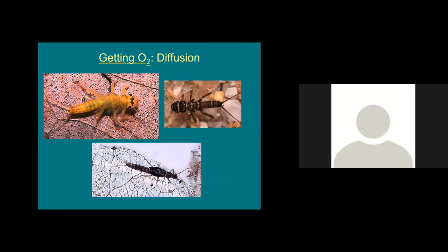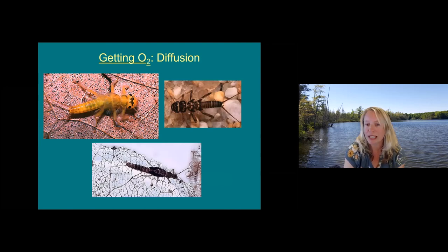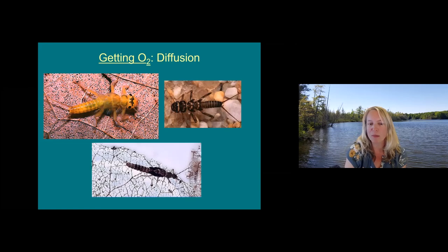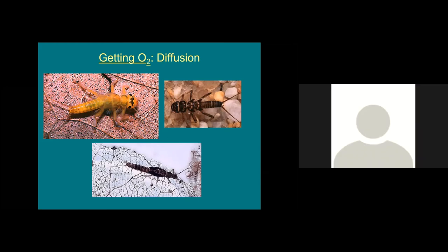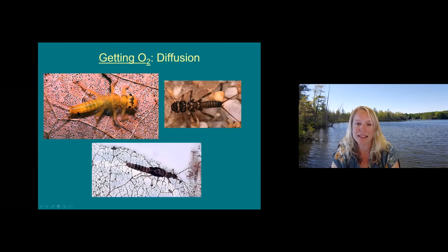The key identifier most people think of is mayflies have three tails and stoneflies have two tails. There are a few mayflies where the center tail is really, really short so they can look like they have two tails. Another thing to look for — stoneflies have two claws on every foot while mayflies just have one. So stoneflies have a pair of tails and a pair of claws, while mayflies have three tails and a single claw on the end of each foot. You'll also see, not in all stoneflies but in many, tufts of gills at the base of a lot of their legs, while mayfly gills are all on their abdomen.